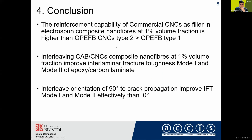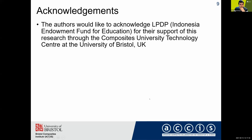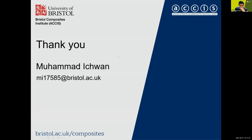For the conclusion: the reinforcement capability of commercial CNC as filler in electrospun composite nanofiber at one percent volume fraction is higher than OPEF-CNC type 1 and type 2. For the interleaf, the 90 degree orientation reduces crack propagation and improves interlaminar fracture toughness in Mode 1 and Mode 2 more effectively than the zero degree direction. I would like to acknowledge LPDP, the National Endowment Fund for Education, for supporting my research and study. Thank you very much for your attention.